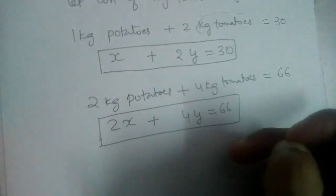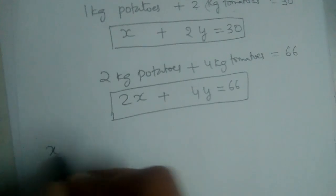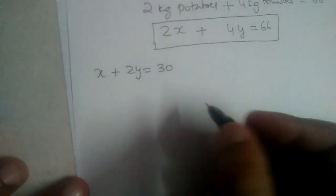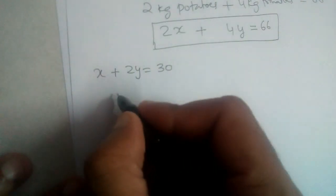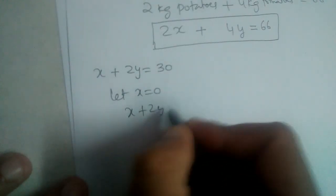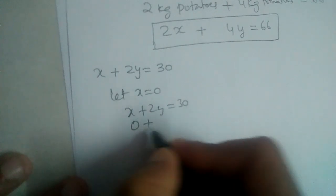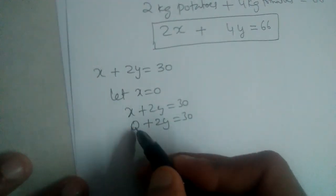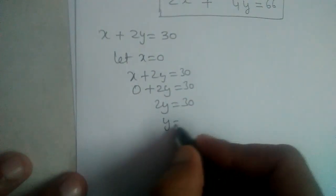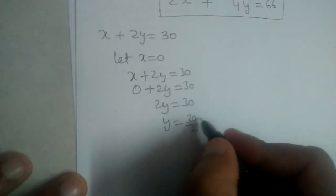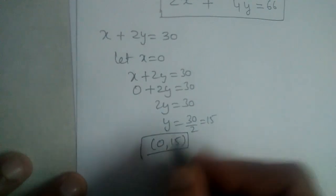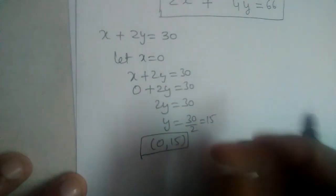We should solve this graphically. Let us first find the solutions of x plus 2y is equal to 30. Let x equal 0. The equation becomes 0 plus 2y is equal to 30, so 2y equals 30, and y equals 30 divided by 2, which is 15. So the first solution is (0, 15).